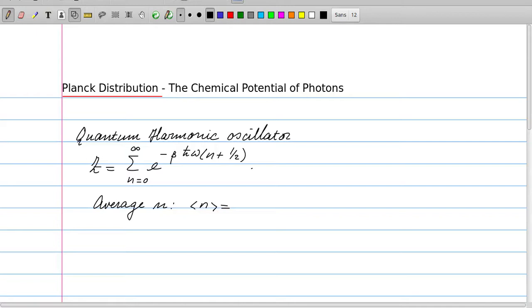I would like to calculate the average value of this number n, which I indicate by n in these angular brackets, and that's given by the following expression. In the numerator, you see a factor of n. We sum now from n equals one to infinity because n equals zero would not give any contribution. Then we have the Boltzmann factor, and we need to divide by the partition function.